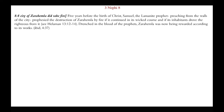Chapter 8, verse 8 — the city of Zarahemla did take fire. Five years before the birth of Christ, Samuel the Lamanite prophet, preaching from the walls of the city, had prophesied the destruction of Zarahemla by fire if it continued in its wicked course and if its inhabitants drove the righteous from it. Drenched in the blood of the prophets, Zarahemla was now being rewarded according to its works.